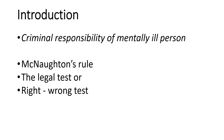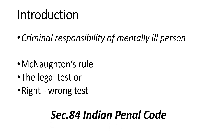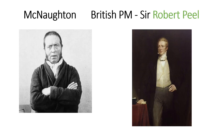McNaughton's rule is followed in British law for dealing with cases whenever an offense is committed by a mentally ill person. Based on McNaughton's rule only, we have Section 84 of the Indian Penal Code, which deals with the criminal responsibility of a mentally ill person. To understand this in detail, we must first know what McNaughton's rule is and why it is called McNaughton's rule.